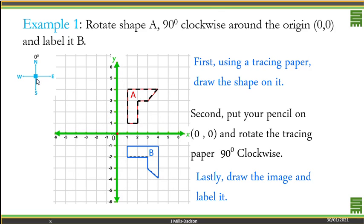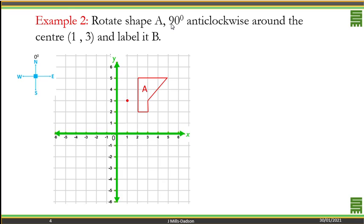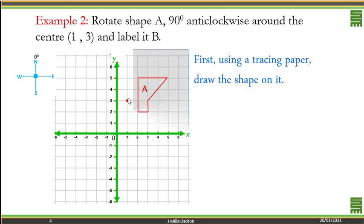Let's look at example two. 90 degrees anti-clockwise around the center one, three. So that's the center. Tracing paper, trace it. Now 90 degrees anti-clockwise this way means the north should now be facing west. So keep turning until the north side is facing west.